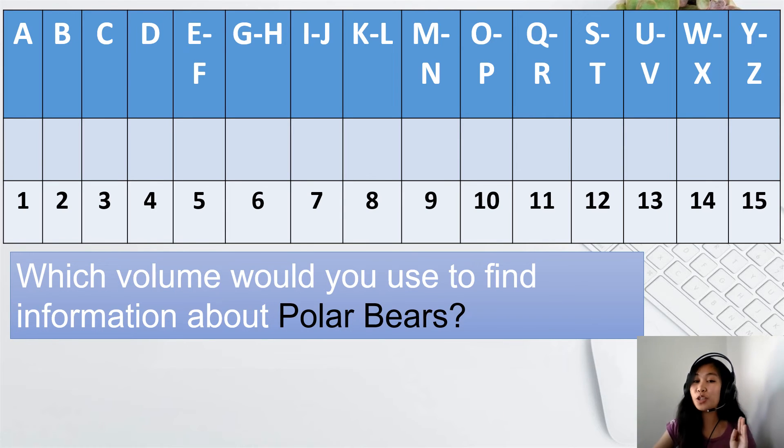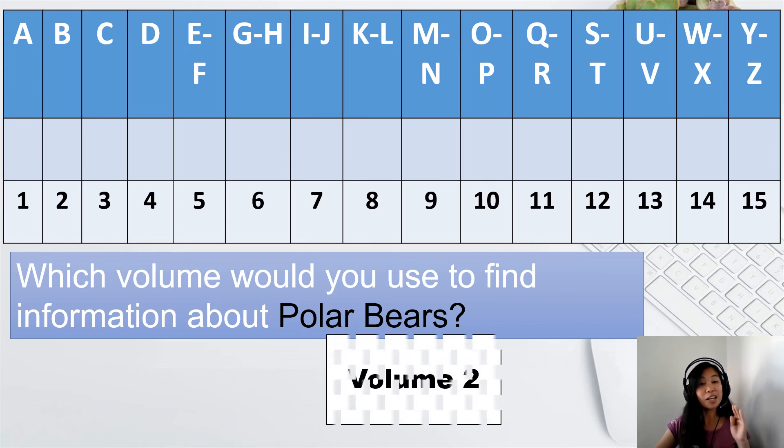Number 3. Which volume would you use to find information about polar bears? Correct. Volume number 2. What's more important here? The polar or the bears? Correct. The word bears. That's why you will get it in volume number 2 because volume number 2 contains information about the words that starts with letter B.